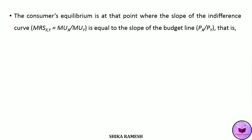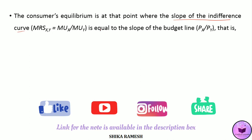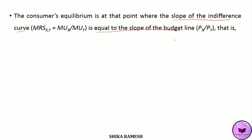The consumer reaches equilibrium at that point where the slope of the indifference curve is equal to the slope of the budget line. This can be written as the marginal rate of substitution of good x for y is equal to MUx by MUy, which is equal to Px by Py.